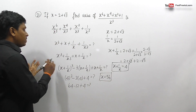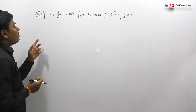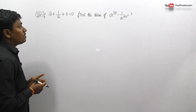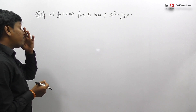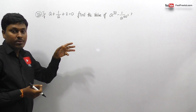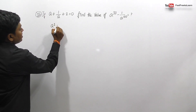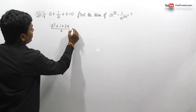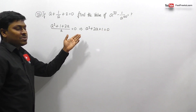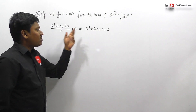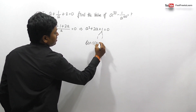Question number 22. If a plus 1/a plus 2 equals 0, find a³⁷ minus 1 divided by a¹⁰⁰. Taking LCM as a: a² plus 1 plus 2a divided by a equals 0, so a² plus 2a plus 1 equals 0. This is a quadratic that factors as (a plus 1)(a plus 1) equals 0, so a equals minus 1.